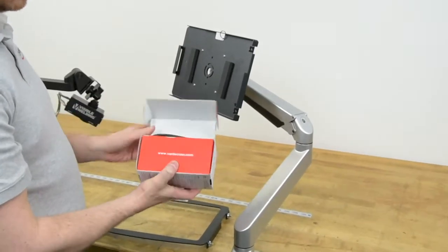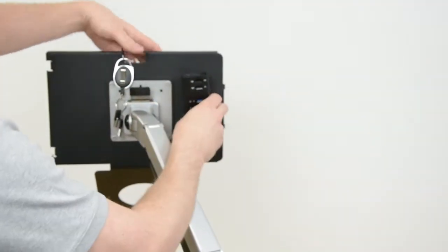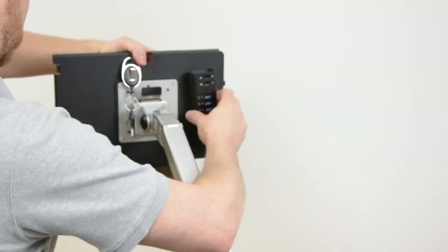Now the next step we want to do before we put the surface in is get the USB hub mounted on the back of it so it's ready. And the hub's got a very strong Velcro backing, which is also on the back of the case right now. And so we're just going to push it on.